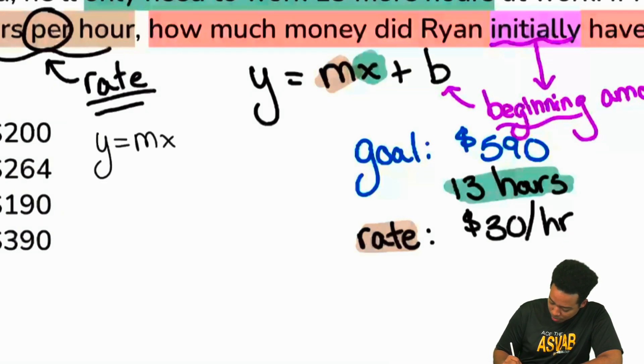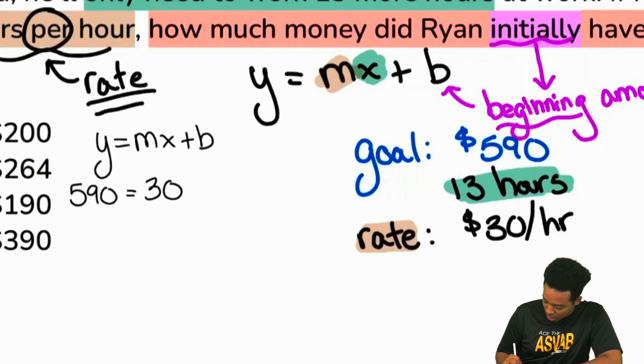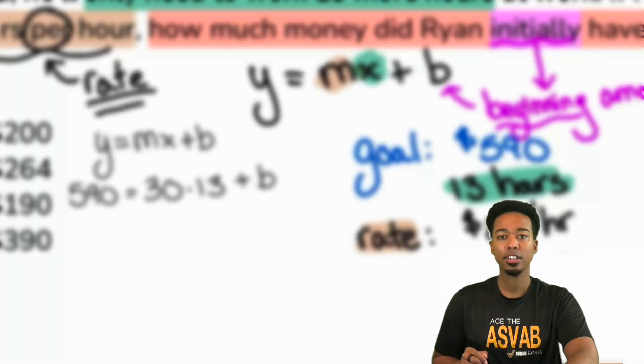So here we go. Y equals mx plus b. I'll plug in my values. My goal is 590. My rate is $30 an hour. The time, the x, is 13 hours. And the beginning amount is right there.